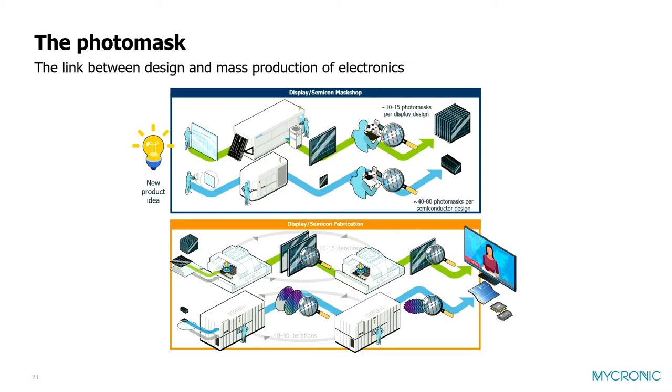This is the business of our customers, the mask shops. When the mask shop is ready with the set of photo masks, they send it to the manufacturer of the chip or the display panel. The manufacturer duplicates the pattern from the photo mask onto a substrate, or in the case of semiconductors, on a wafer. That is repeated until all layers are duplicated, then the wafer or panels are split and go into all the different devices we use every day.